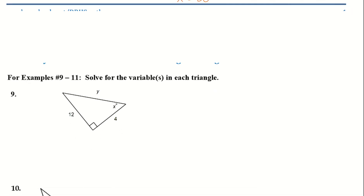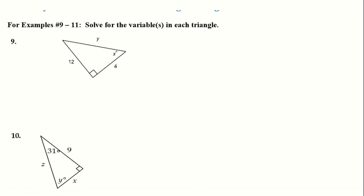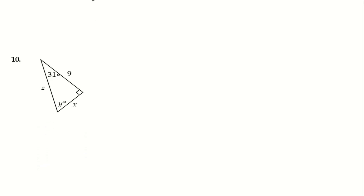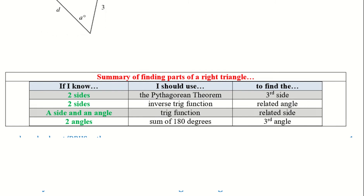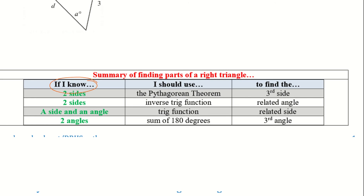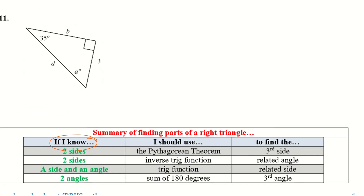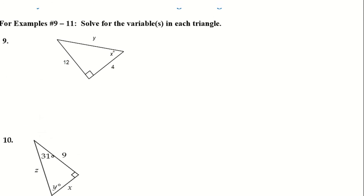For examples 9 through 11, solve for the variables in each triangle. We'll need to set up both plain trig functions and inverse trig functions. At the bottom of the page is a summary of finding parts of right triangles — if you know two sides, a side and an angle, or two angles, you'll use different approaches depending on what's given.